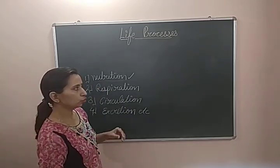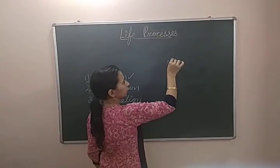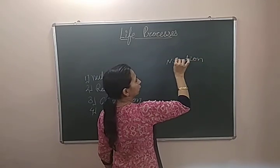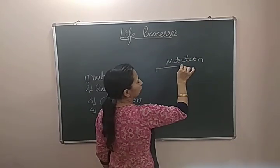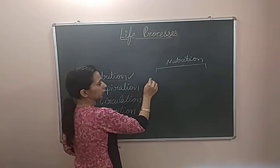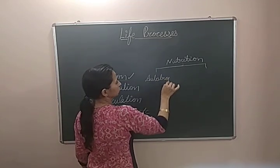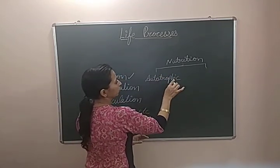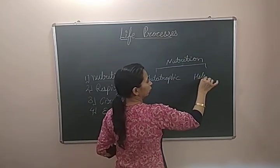We will discuss nutrition in detail. Nutrition can be of two types, on the basis of how it is obtained or how it can be taken in. On this basis, we divide nutrition into two types: the first one is autotrophic nutrition and the second one is heterotrophic nutrition.